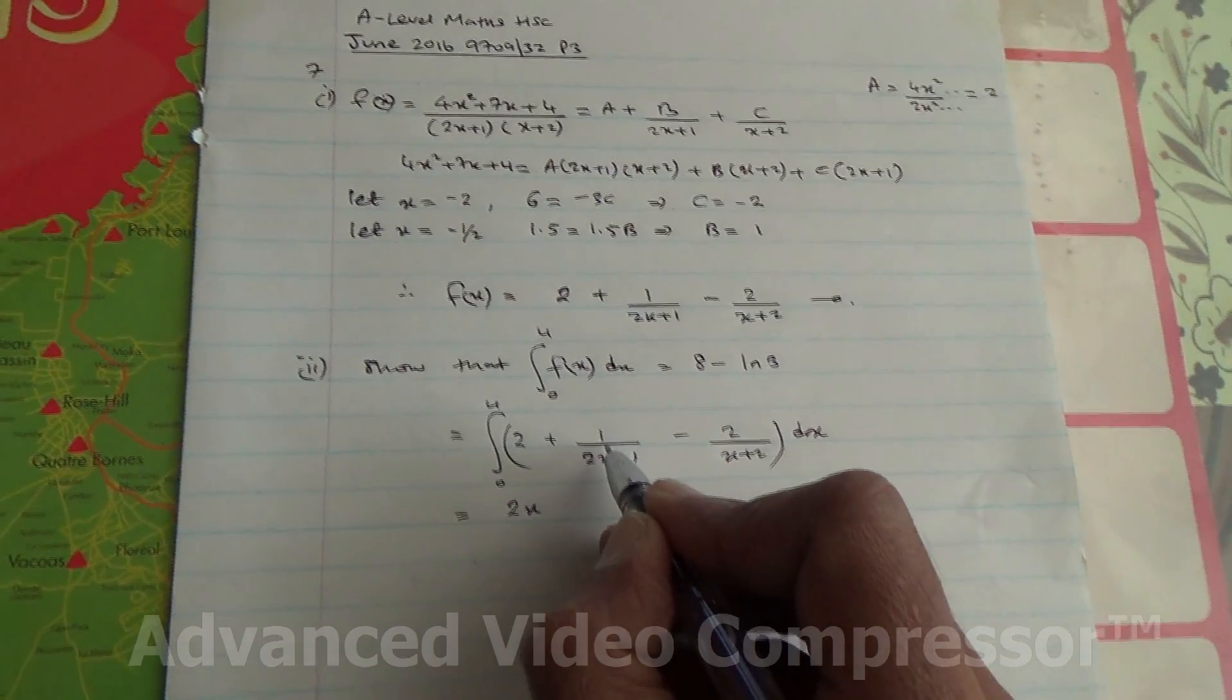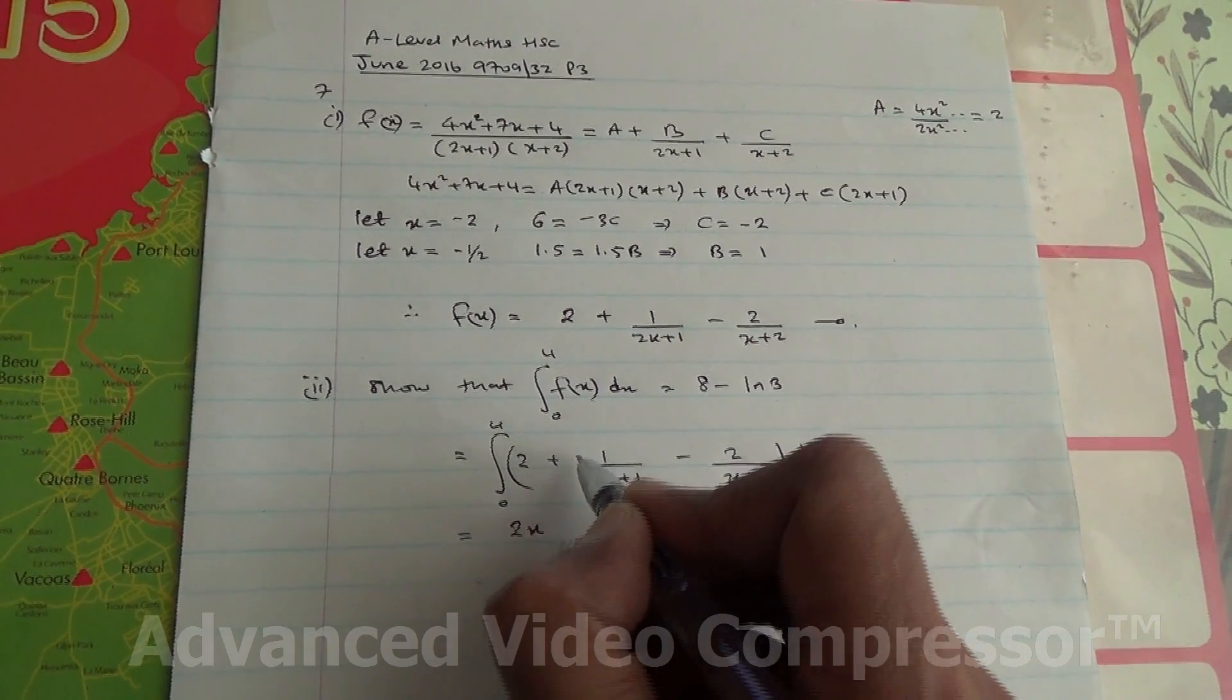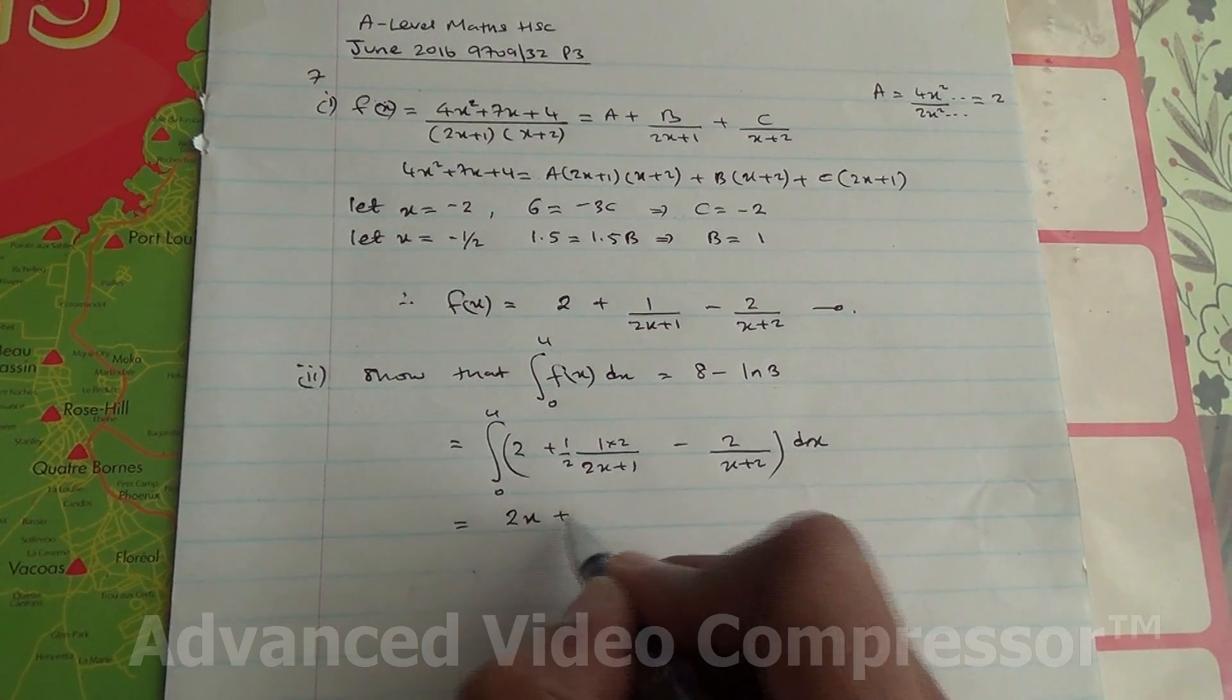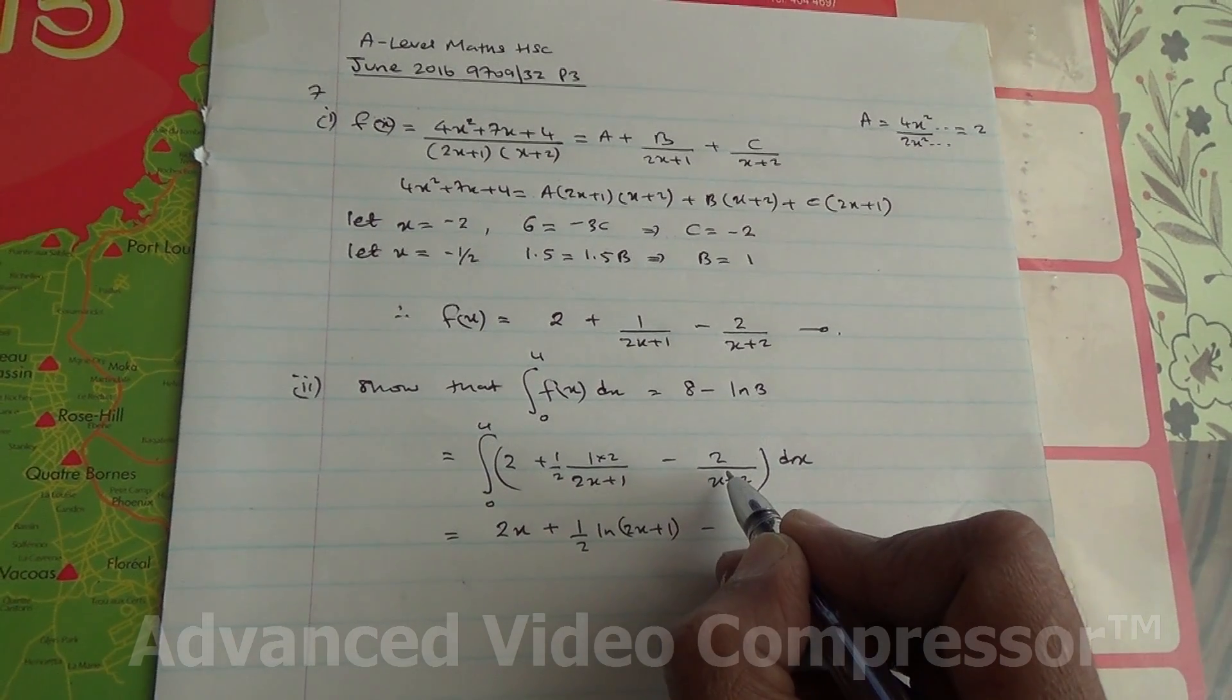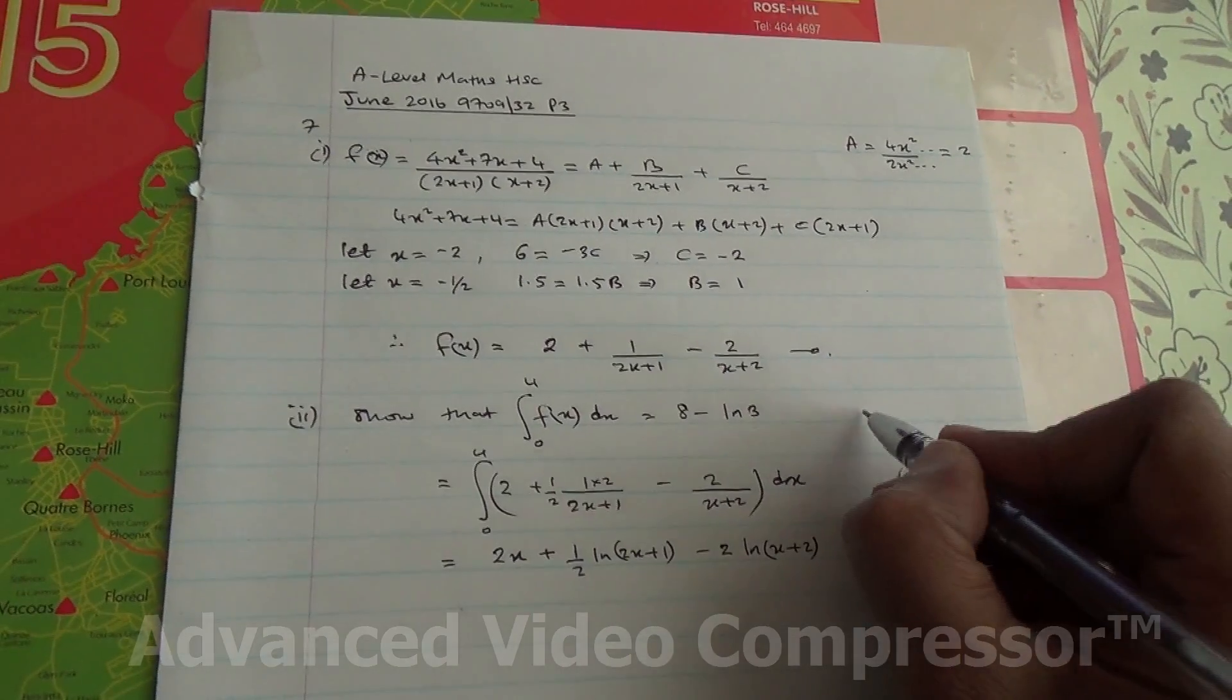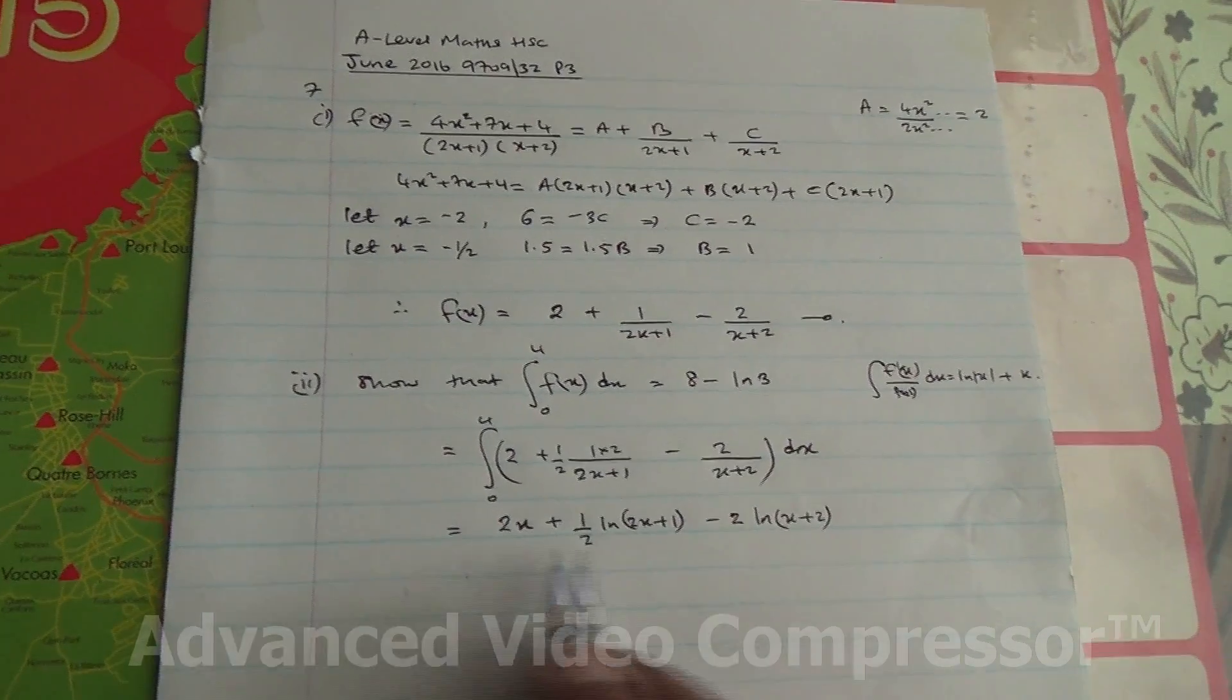Integrating 2, you're going to get 2x. Integrating 1 over (2x plus 1), if you differentiate the denominator, you're going to end up with 2. And there's no 2 there, so you can put a 2 here and a half. So I can integrate this as one-half times ln(2x plus 1). Minus, if you integrate this one, you can put the 2 outside as a constant. Integrating 1 over (x plus 2) is ln(x plus 2). I'm talking about the integral of f'(x) over f(x) dx, which equals ln(x). Right, now from here we have our integral, and therefore, we just need to substitute the limits in.